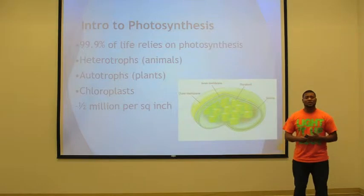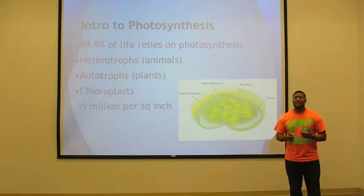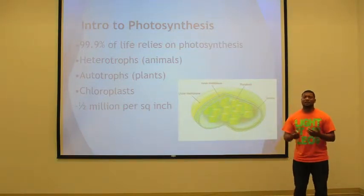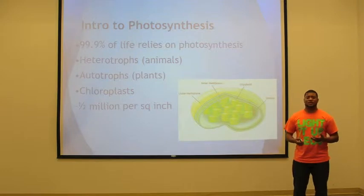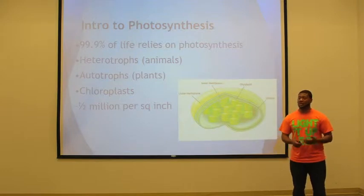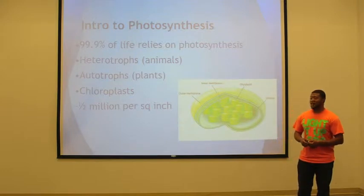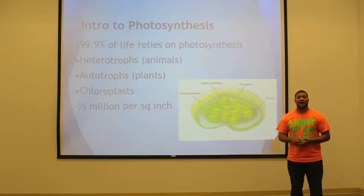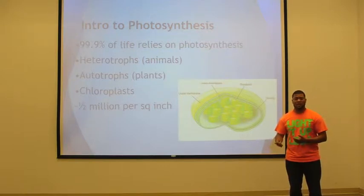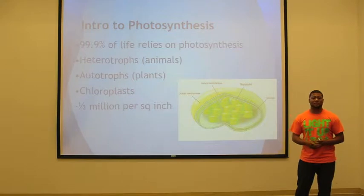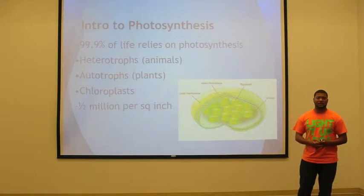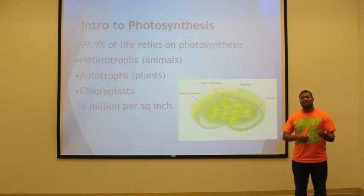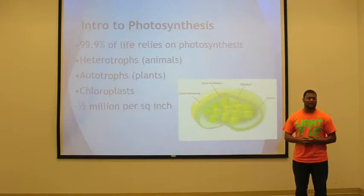Just a little bit of intro to photosynthesis. 99.9% of life on Earth requires photosynthesis to survive and to get its energy and nutrients. Life on Earth is divided up into two categories: heterotrophs and autotrophs. Heterotrophs are animals, autotrophs are plants, and heterotrophs actually eat autotrophs.